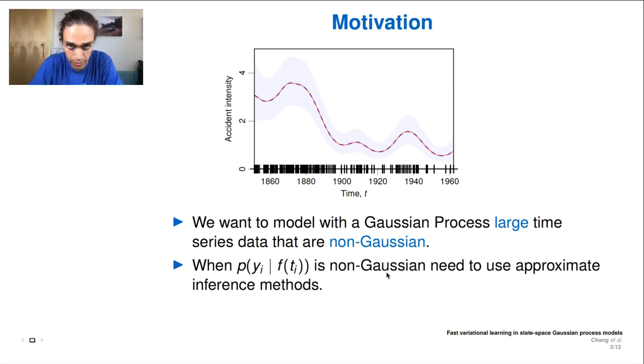But with examples like this, and also for classification examples, the likelihood is now non-Gaussian, and thus we lose the nice closed form updates for our posterior. So we are left to do something known as approximate inference methods.